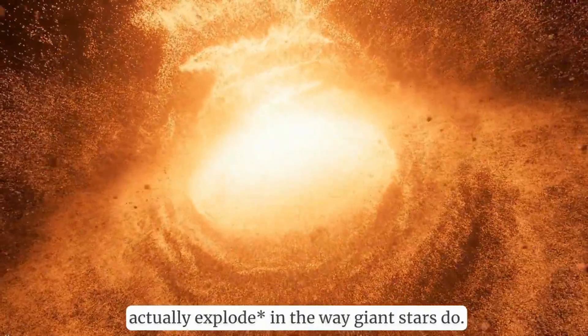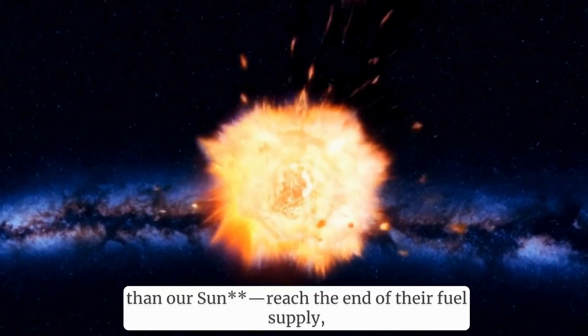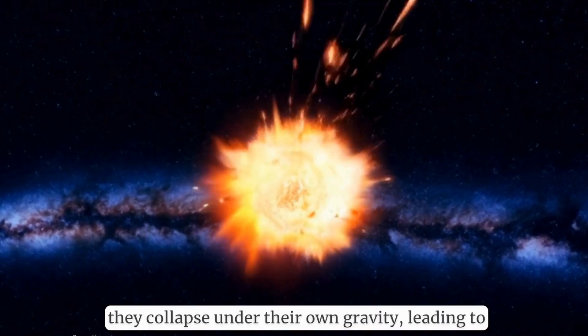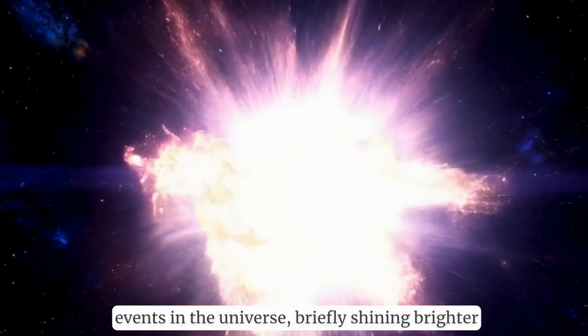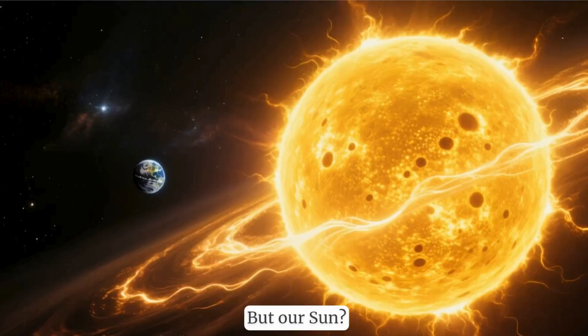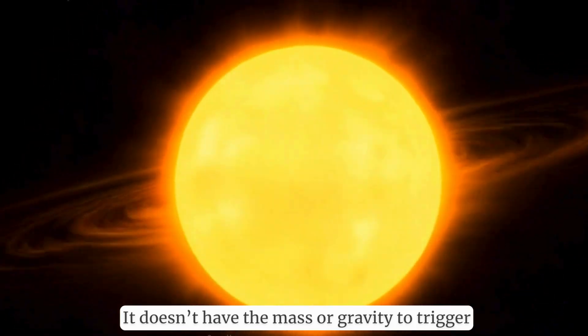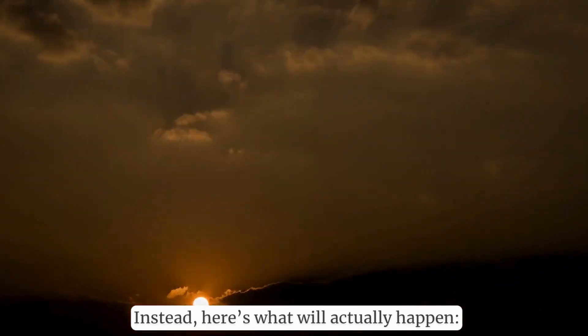When massive stars, at least eight times heavier than our Sun, reach the end of their fuel supply, they collapse under their own gravity, leading to a supernova explosion. These explosions are some of the most powerful events in the universe, briefly shining brighter than entire galaxies. But our Sun? It's simply not heavy enough to go supernova. It doesn't have the mass or gravity to trigger that kind of catastrophic collapse. Instead, here's what will actually happen.